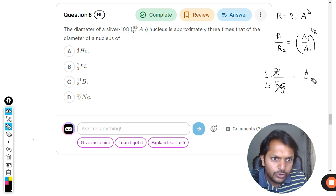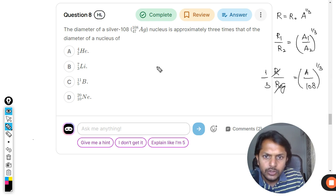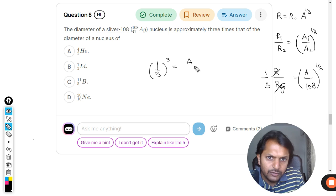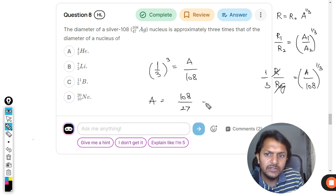The mass number is not known to us. A1 is not known. A2 is given as 108. We want to take the cube root of this. So from this, I can say 1 by 3 raised to power 3 is equal to A divided by 108. Hence, A is equal to 108 divided by 27.